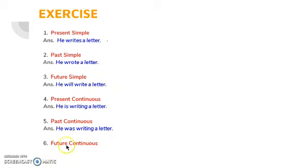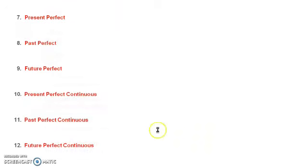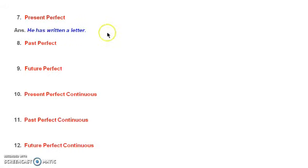In future continuous, I take help of 'shall' or 'will'. So the sentence will be: 'he will be writing a letter.' For present perfect, I take help of V3 form. 'He has written a letter' — with V3 form, I write 'has' or 'have'.